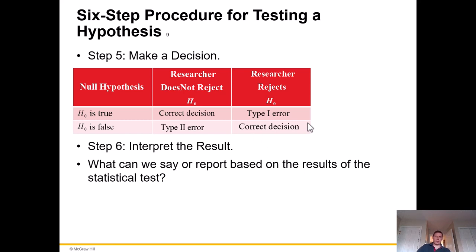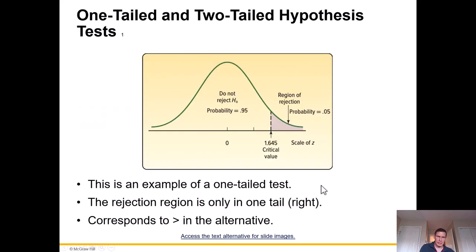Step six is to interpret the results — what can we say or report based on the results of the statistical test? That covers the six steps of the hypothesis testing procedure.